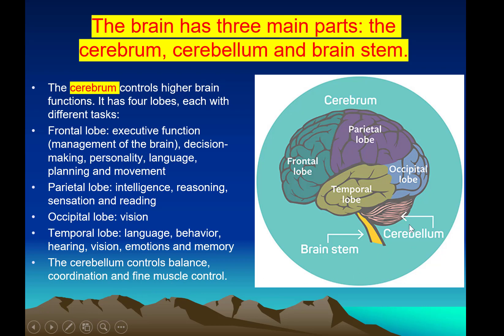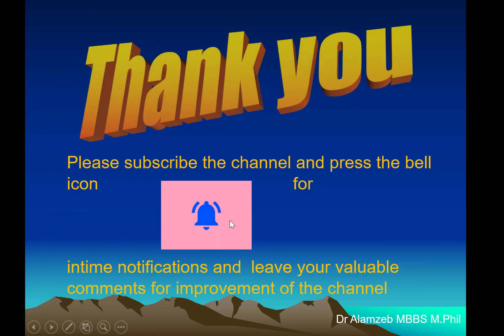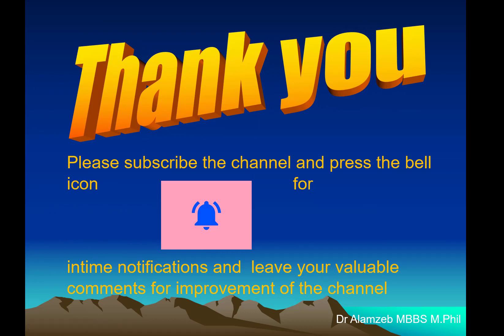Balance, coordination, and fine movement are controlled by the cerebellum, including organized fine movements like writing and typing. The brainstem has centers for the respiratory and circulatory systems, and many other centers that will be discussed in detail in upcoming lectures. Thank you — please subscribe to the channel, press the bell icon for notifications, and leave your valuable comments for improvement.